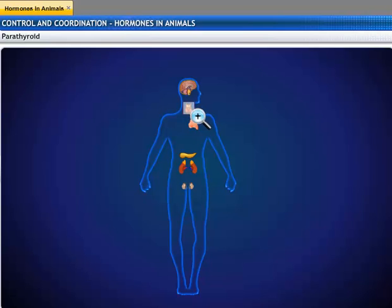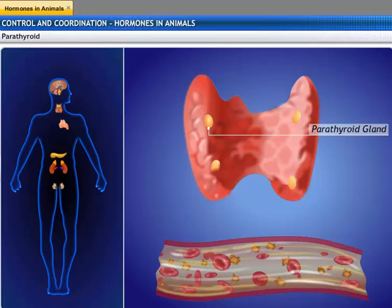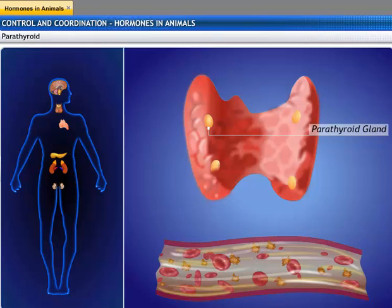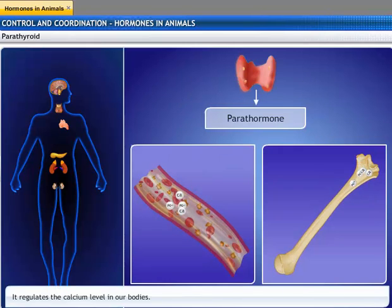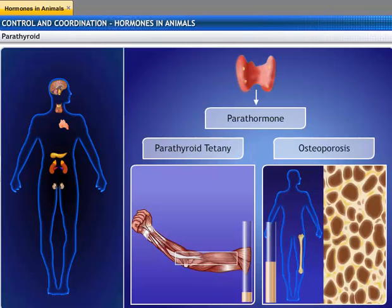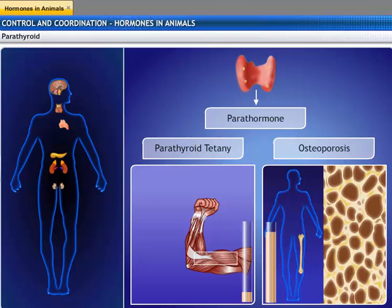Parathyroid glands are two pairs of small, oval-shaped glands embedded on the dorsal surface of the thyroid gland in the neck. They secrete parathyroid hormone, or parathormone. Parathormone helps in the regulation of calcium and phosphate ions in bones and blood. Hypo-secretion leads to parathyroid tetany, and hyper-secretion causes osteoporosis.